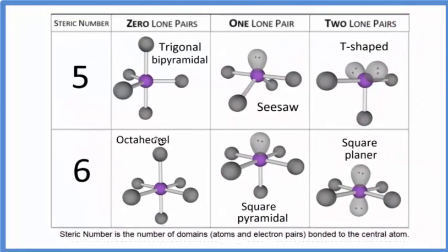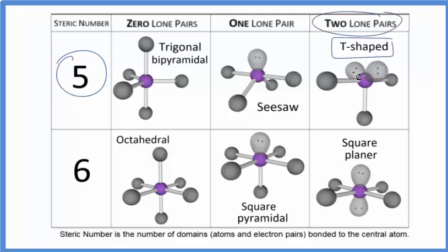So on our table, we have a steric number of five, because we have those three atoms and those two lone pairs. So five things are attached to our central atom, and then we have two lone pairs. So steric number of five, because we have five things attached, two lone pairs. There it is. That's the T-shaped molecular geometry.